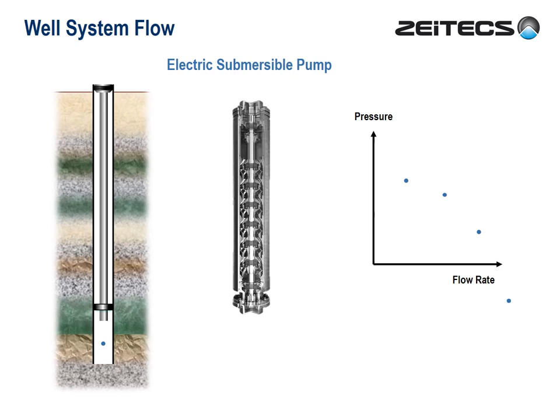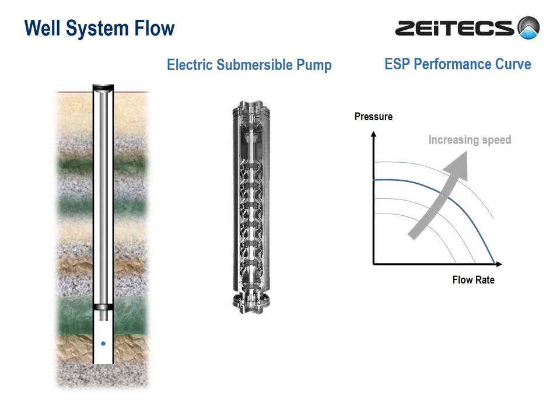So now we're building an ESP performance curve, and since this curve will vary with pump speed, we'll expand the picture for variable speeds. At the far left of these curves, the pump will struggle against the near-stationary fluid column, and the reactive forces known as down thrust will accelerate wear. This is bad news.